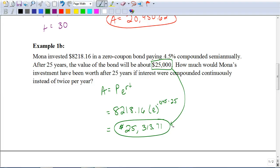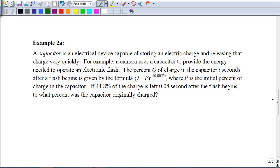Let's look at one last example. Here it says a capacitor is an electrical device capable of storing an electric charge and releasing that charge very quickly. For example, a camera uses a capacitor to provide the energy needed to operate an electronic flash. The percent Q of charge in the capacitor T seconds after flash begins is given by this formula, where P is the initial percent of the charge of the capacitor. If 44.8% of the charge is left 0.08 seconds after the flash begins, to what percent was the capacitor originally charged?